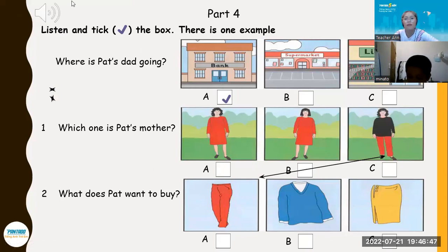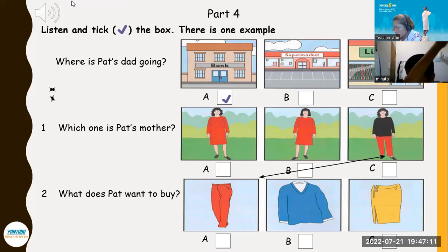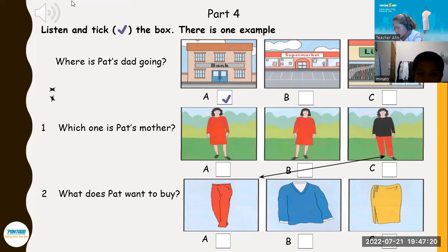Part Four. Look at the pictures. Listen and look. There is one example. Where is Pat's dad going? Is that your father walking to the bus stop, Pat? Yes, it is, Sam. Where's he going? He's going to town for mum. Is he going to the supermarket? No, I went there yesterday. Mum's going to the library this afternoon. I know — he's going to the bank. Can you see the tick? Now you listen and tick the box.